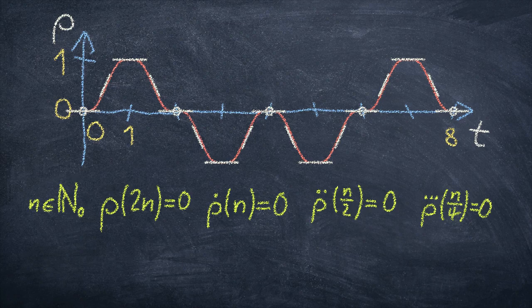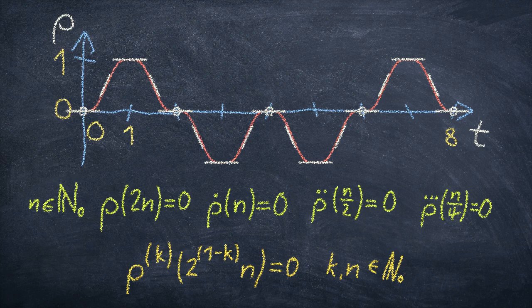The general equation describing this comes down to this, with k being the index of the derivative and n counting through the zeros. Now, the interesting thing about this is that once any of the derivatives is 0 in a point, all further derivatives are also 0 there, which has interesting consequences.